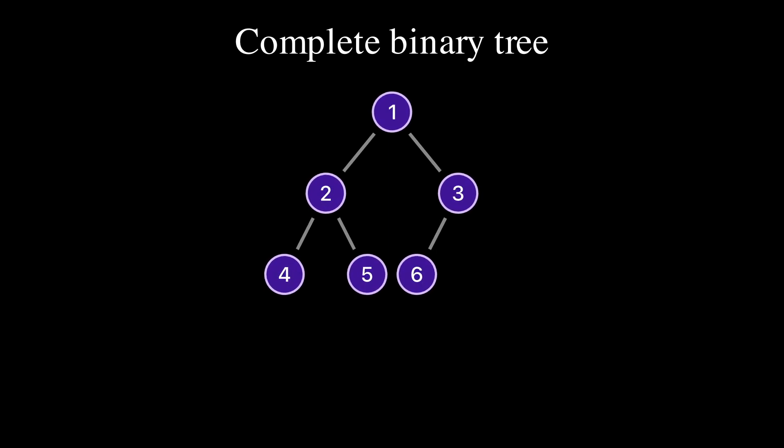A binary tree is called complete if all the levels except the last level are completely filled, and all the nodes in the last level are as far left as possible.